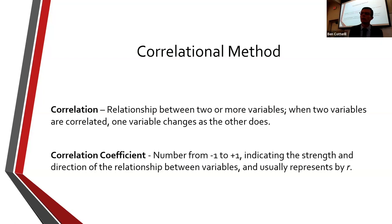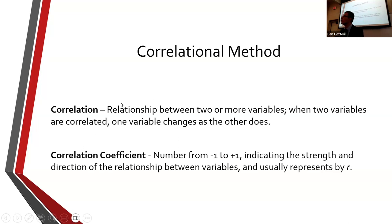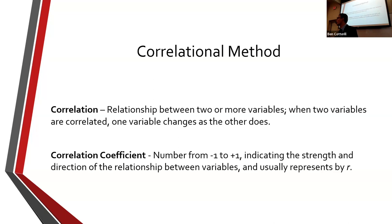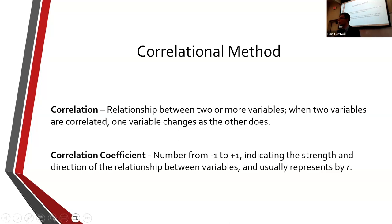The other main method — and the most popular method in psychological research — is the correlational method, in which we're looking for a correlation or relationship between two variables. This could be two personality traits like happiness and anxiety, or extraversion and emotional stability. What we want to know is: are they correlated? As one goes up, does the other go up, go down, or have no bearing on the other?